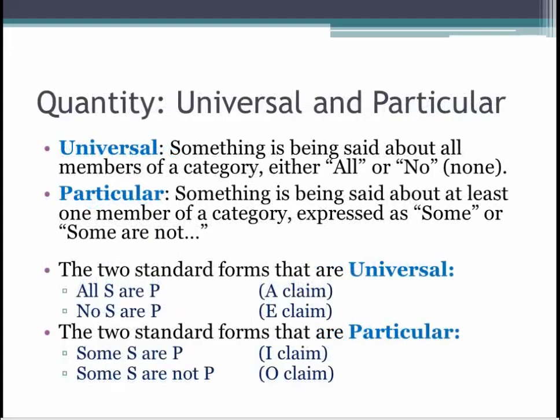Standard propositions are one of two quantities: either universal or particular. A proposition is universal when it says something about all members of a category. All S are P says that all S's are also part of the P category. No S are P says that no S's are part of the P category. A proposition is particular when it says something about only some of the members of a category. Some S are P says that at least one S is a P. Some S are not P says that at least one S is excluded from the P category. Using the abbreviations, A and E claims are universal claims and I and O claims are particular claims.